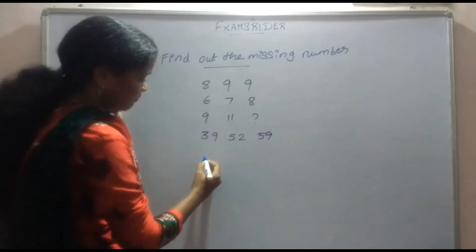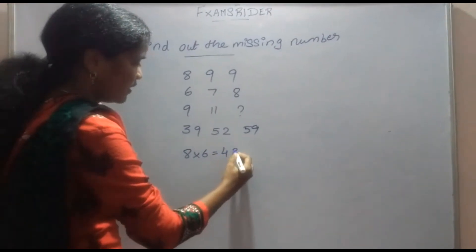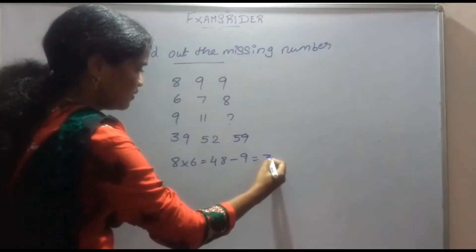The solution is 8 into 6, 48, minus 9, 39.